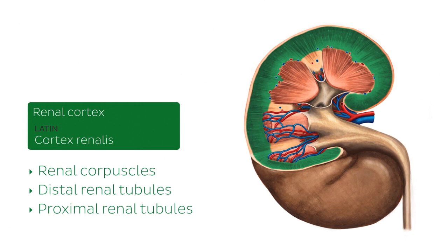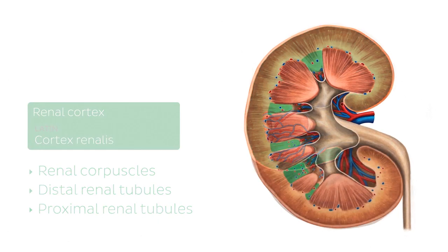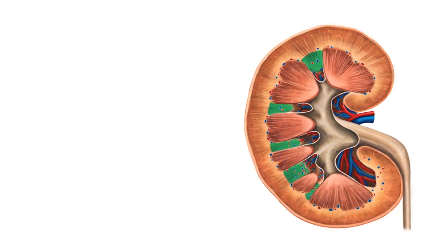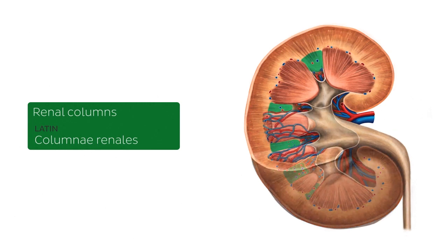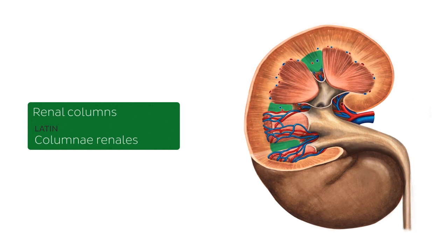The next structures highlighted in green on the image are known as the renal columns. The renal columns are extensions of the renal cortex that extend down between the pyramids of the renal medulla, and these renal columns contain urinary tubules and blood vessels.